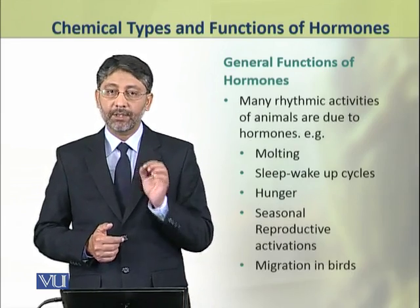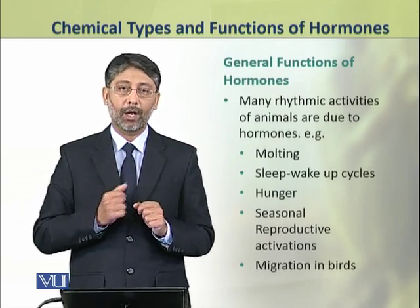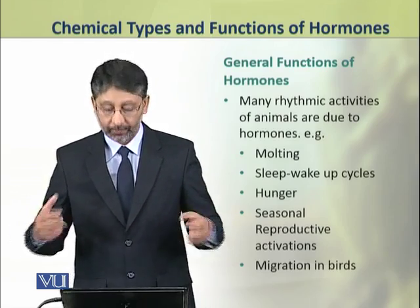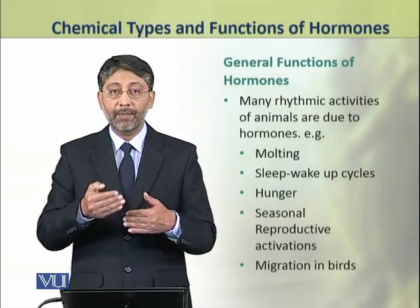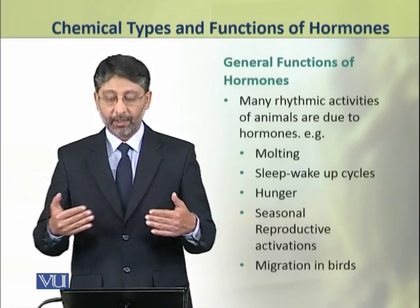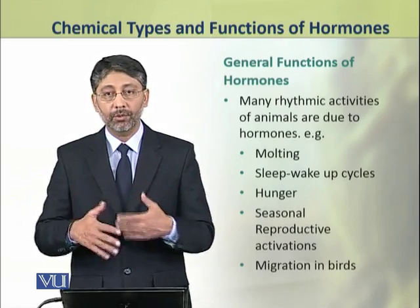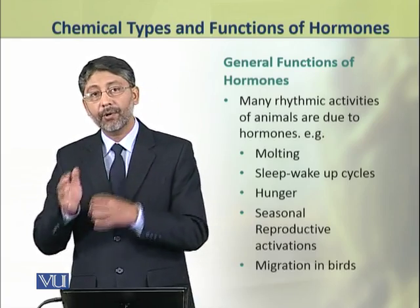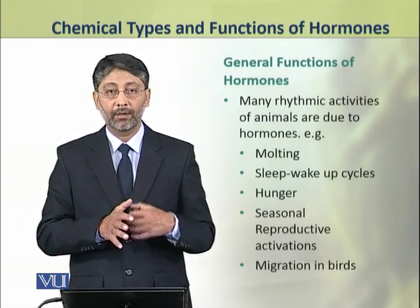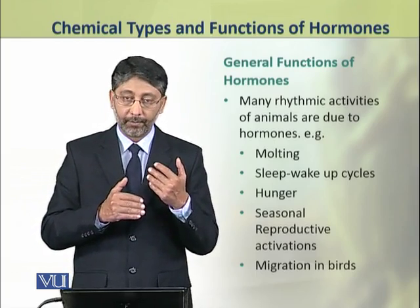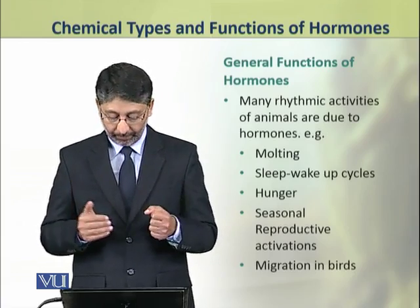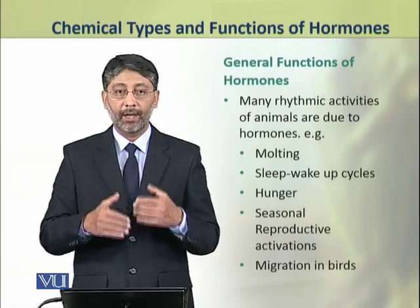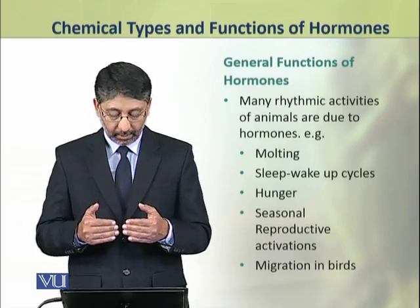Many rhythmic activities of animals are also due to hormones. For example, molting in insects is regulated by hormones. Similarly, sleep-wake cycles and hunger cycles in animals are also hormonally regulated. Seasonal reproductive activities in many animals are because of hormonal regulation of these rhythms. Migration in birds, which occurs on an annual and seasonal basis, is also because of hormones.